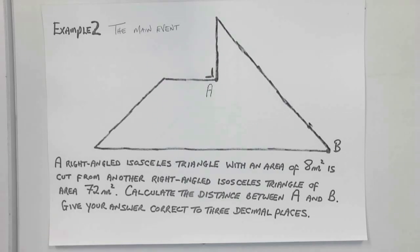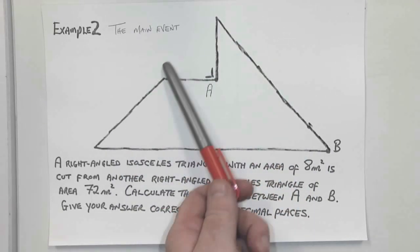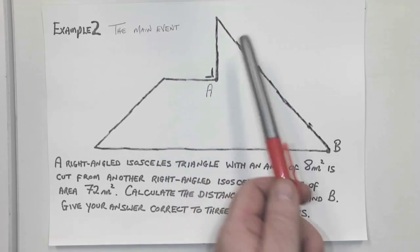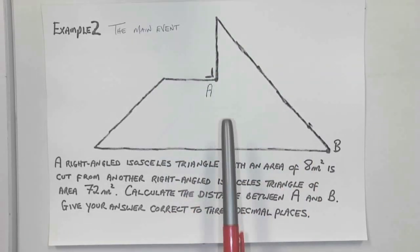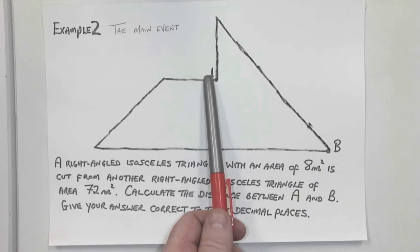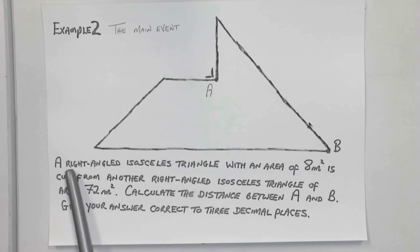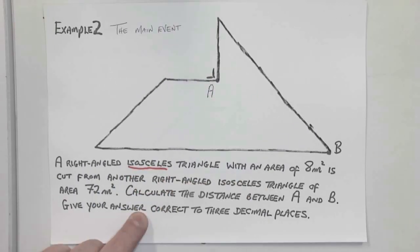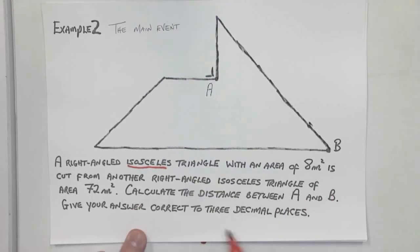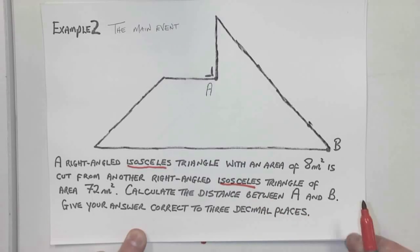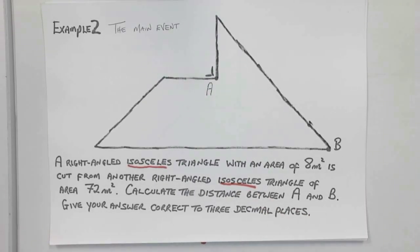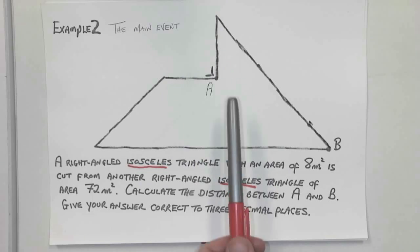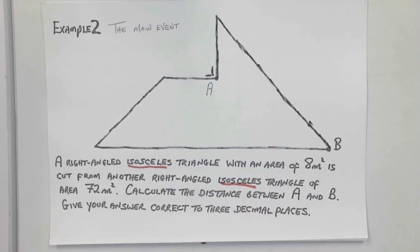And immediately here, I'm into what I'm calling the main event. If you look, you'll see what was almost a complete triangle with a triangle cut out of it. A right-angled isosceles triangle, wow, isosceles is a sneaky word, with an area of 8 square meters, is cut from another right-angled isosceles triangle of area 72 meters squared. Calculate the distance between A and B. Give your answer correct to three decimal places.